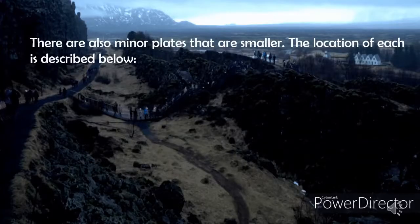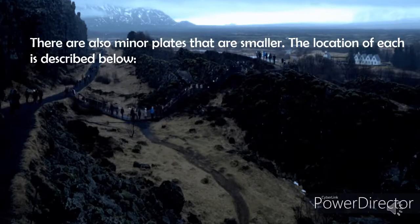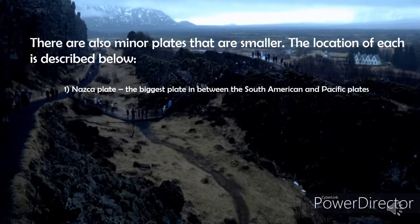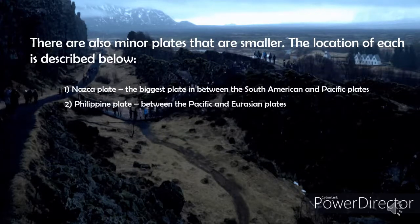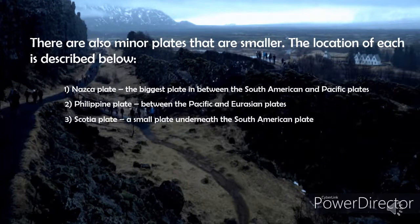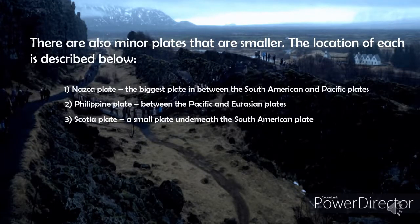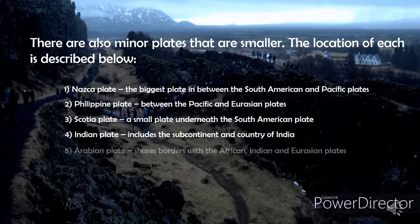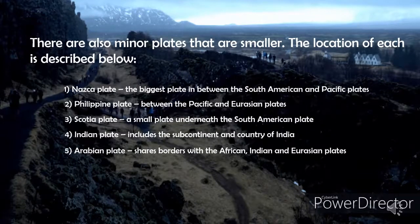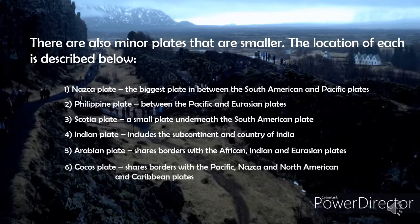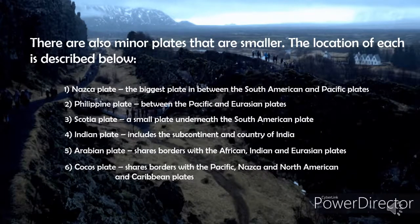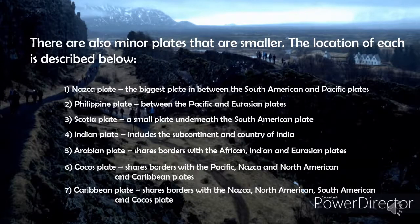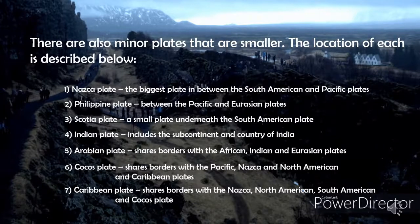There are also minor plates that are smaller. The seven minor plates are: 1. Nazca plate — the biggest plate between the South American and Pacific plates; 2. Philippine plate — between the Pacific and Eurasian plates; 3. Scotia plate — a small plate underneath the South American plate; 4. Indian plate — includes the subcontinent and country of India; 5. Arabian plate — shares borders with the African, Indian, and Eurasian plates; 6. Cocos plate — shares borders with the Pacific, Nazca, North American, and Caribbean plates; and 7. Caribbean plate — shares borders with the Nazca, North American, South American, and Cocos plates.